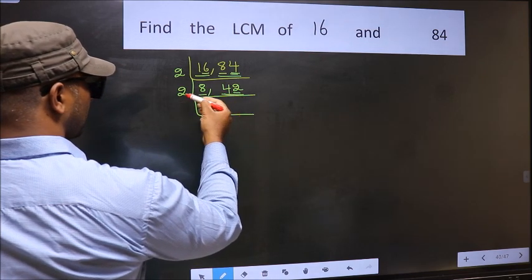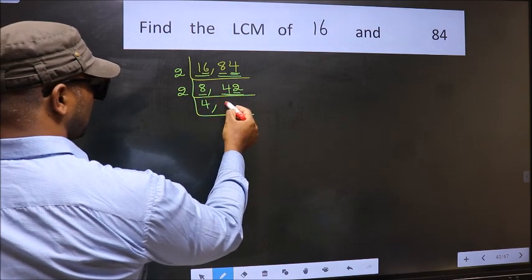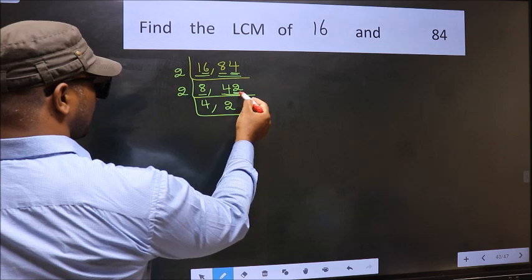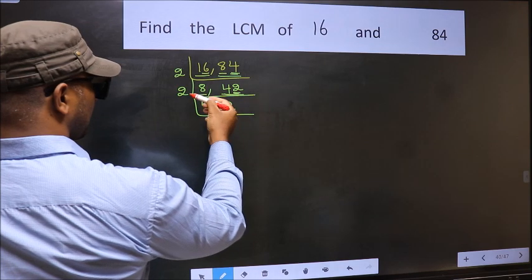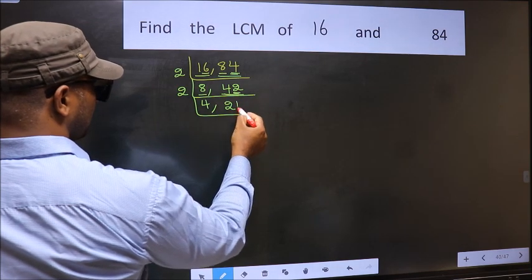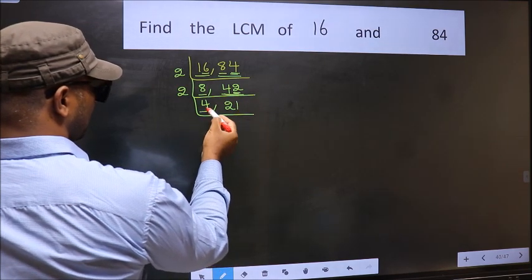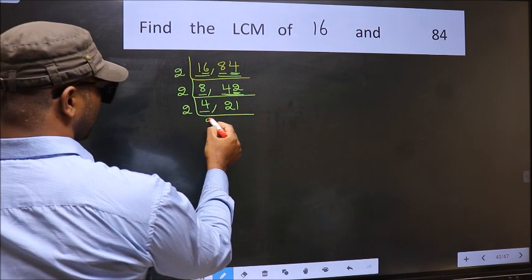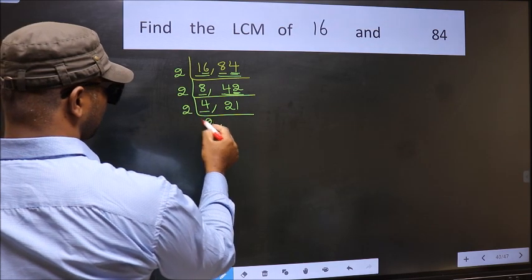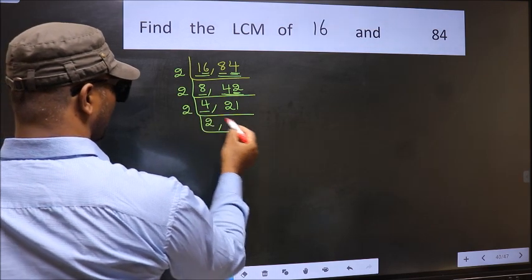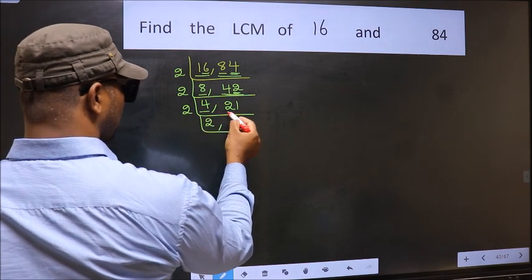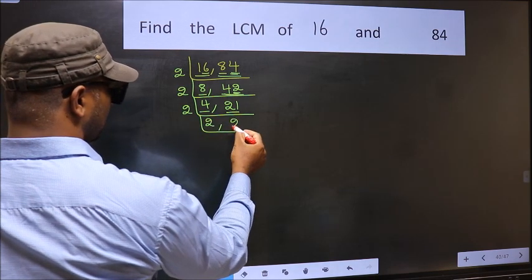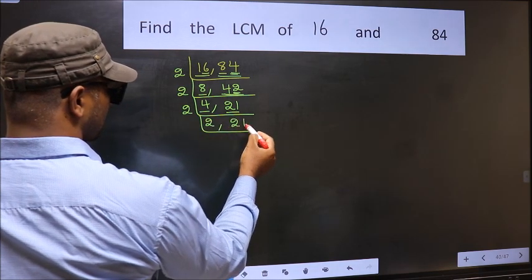First number 4: when do we get 4 in the 2 table? 2 times 2 is 4. The other number 2: when do we get 2 in the 2 table? 1 times 2 is 2. Now here we have 4: 2 times 2 is 4. The other number 21 is not divisible by 2, so we write it down as it is.